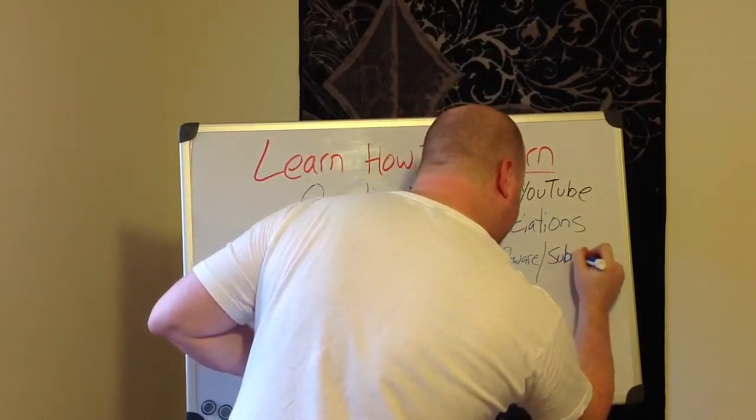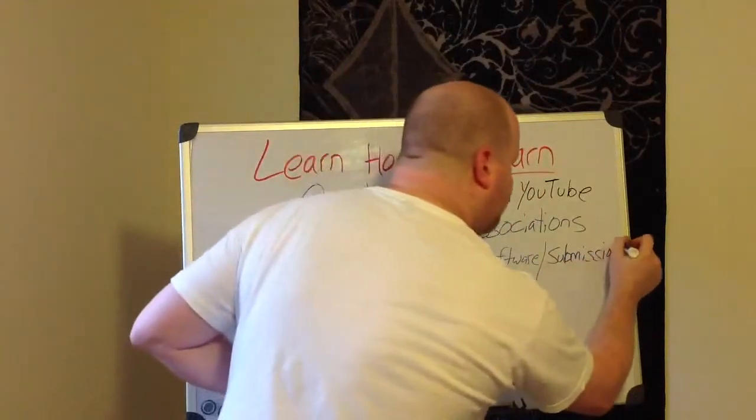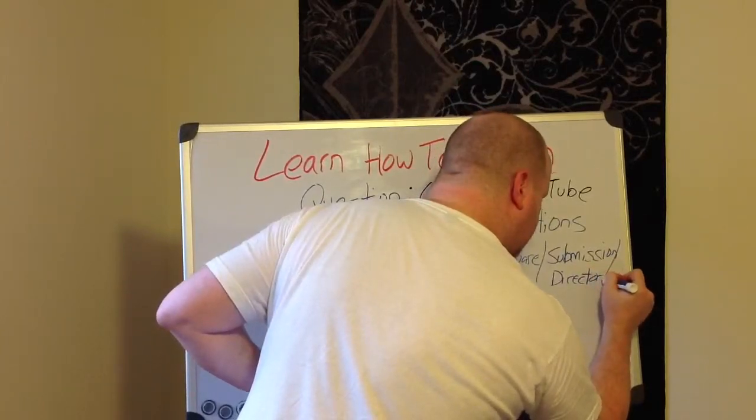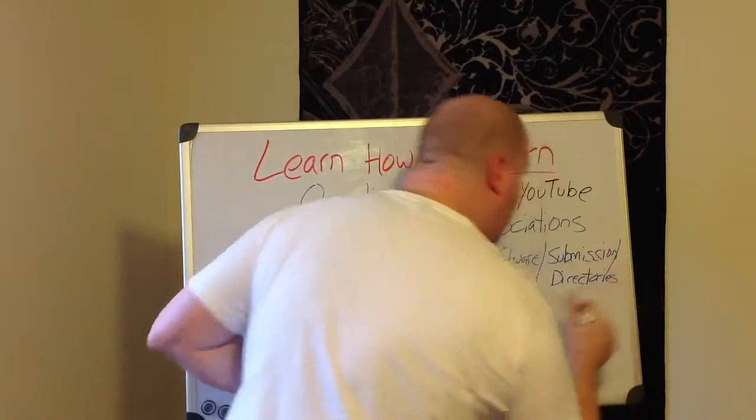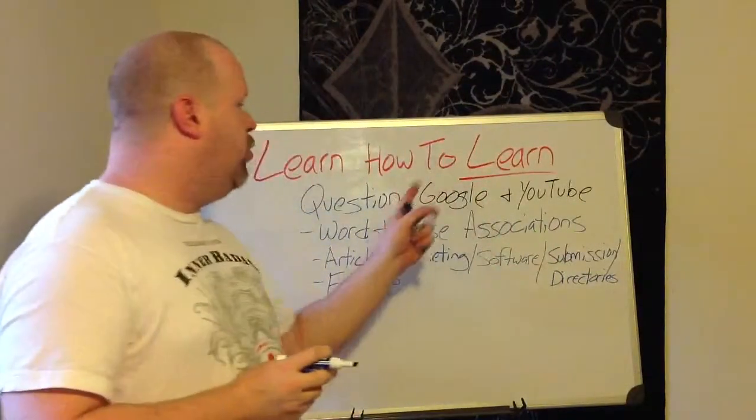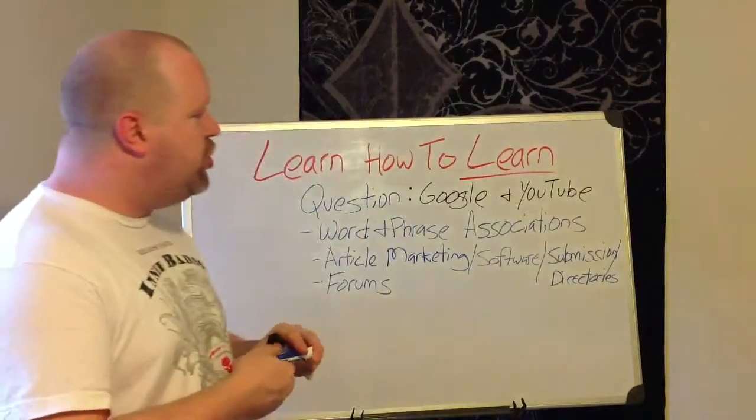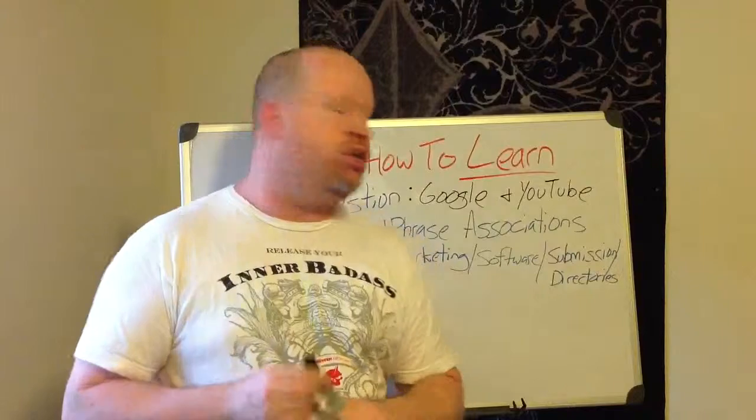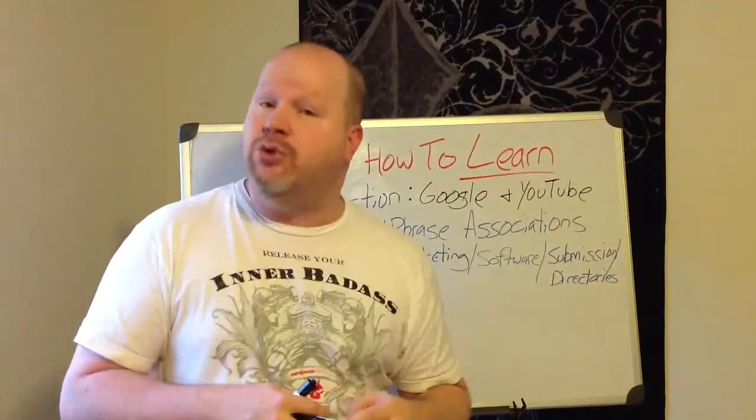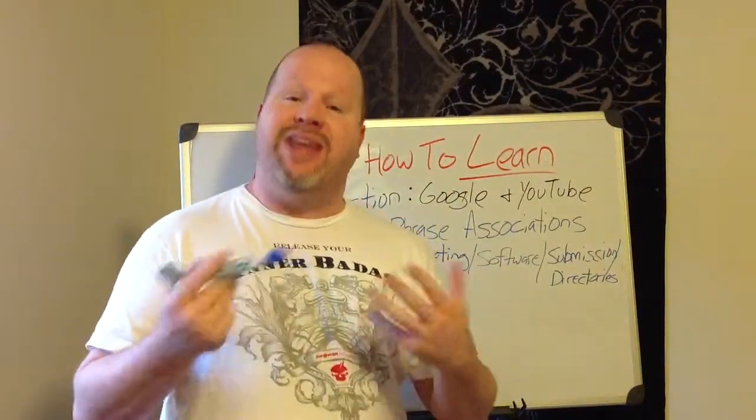You might type in article and then all of a sudden instead of article marketing, it might come up with some other cool stuff that you didn't know about. It might start suggesting software, submission service, it could decide to say directory or directories. It'll start giving you different types of things. As you type in certain parts of the words, both on Google and YouTube, you can start getting different types of answers. The solutions on Google are going to be a little different than on YouTube. YouTube is going to be a bunch of videos, and a lot of it can be how-to videos.